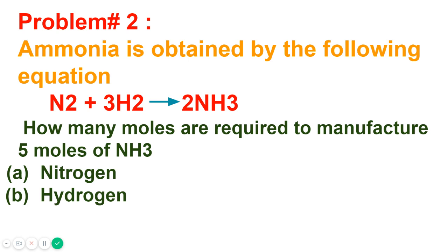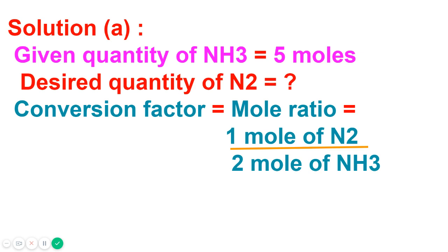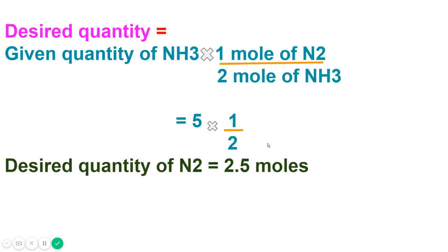Problem number two: ammonia is obtained by the equation where 1 mole of nitrogen reacts with 3 moles of hydrogen to produce 2 moles of ammonia. The question asks (a) how many moles of nitrogen are required to manufacture 5 moles of ammonia. Given quantity is 5 moles of ammonia; desired quantity is nitrogen. The conversion factor is 1 mole of N₂ over 2 moles of NH₃. Multiplying 5 × (1/2) gives 2.5 moles of nitrogen.